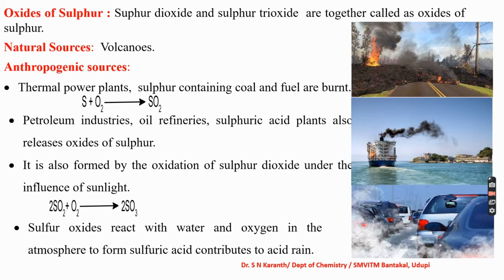The burning of coal is the major source of sulfur dioxide production because coal contains sulfur that combines with oxygen forming sulfur dioxide. Petroleum industries, oil refineries, and sulfuric acid plants also release some amount of oxides of sulfur. Sulfur trioxide is usually formed by the oxidation of sulfur dioxide under the influence of sunlight. Sulfur oxides react with water and oxygen in the atmosphere to form sulfuric acid, contributing to acid rain.